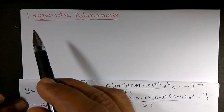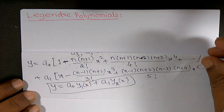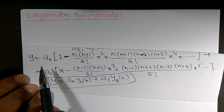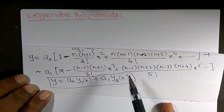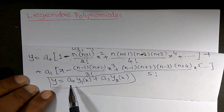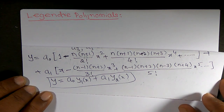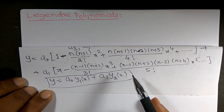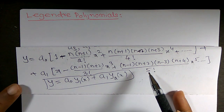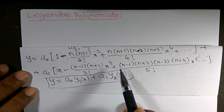Hello friends. Now I want to obtain Legendre polynomials. Before that, I hope we recall that y is equal to the right-hand side terms, and we have derived the equation y = a₀·y₁(x) + a₁·y₂(x) in the last video, namely the series solution of the Legendre differential equation. This is the series solution.